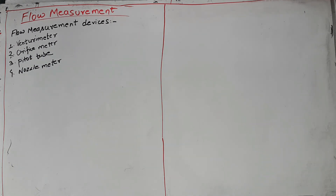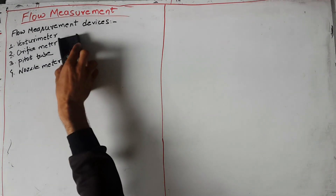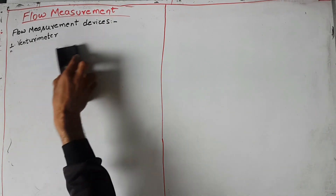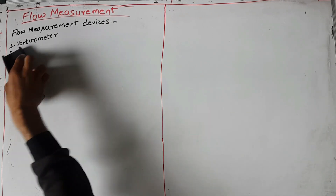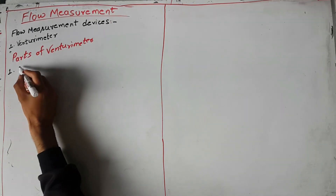In this lecture we will study about venturimeter. Now we start with venturimeter. Before starting, we write the parts of venturimeter: 1. Inlet.